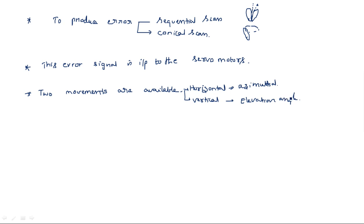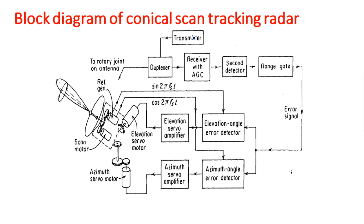Now let us see the setup and block diagram involved in the design of this tracking radar, which has been implemented using the conical scan method. Instead of conical scan, we can also use the sequential method but the same block diagram structure applies. The transmitting section has a transmitter alone, whose output is given to the duplexer. The duplexer separates the transmitting and receiving signals when using a single antenna for both purposes. The output of the duplexer is given to the antenna, which produces the antenna beam.